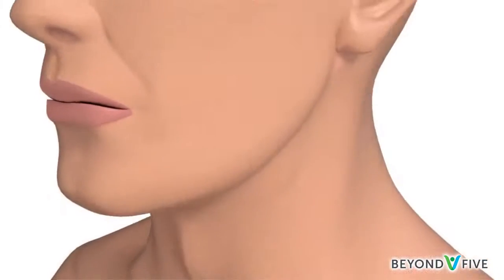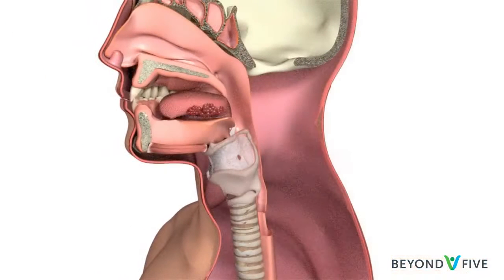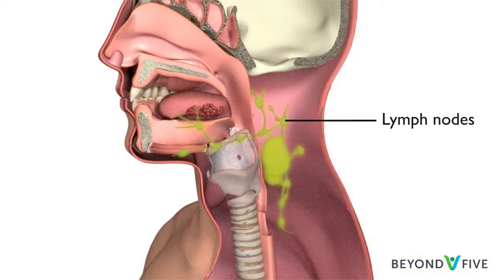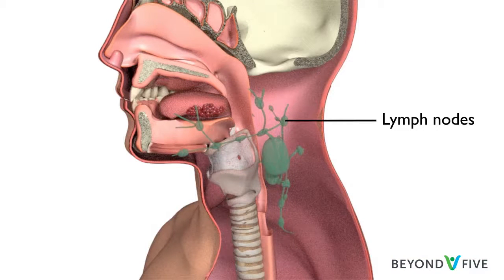Oral cancer can sometimes spread into the lymph nodes, causing a lump to appear in the neck. Lymph nodes are bean-shaped glands in the neck that are part of the immune system's defence against infection.